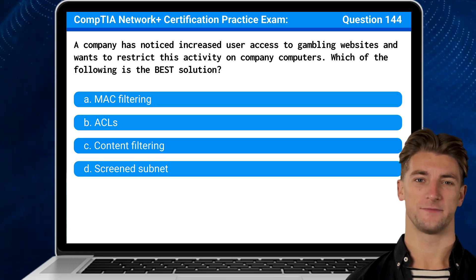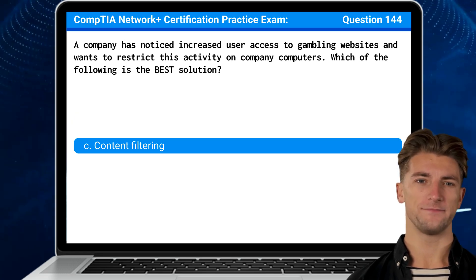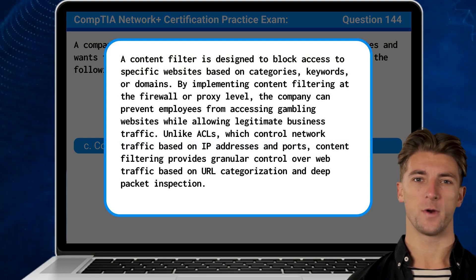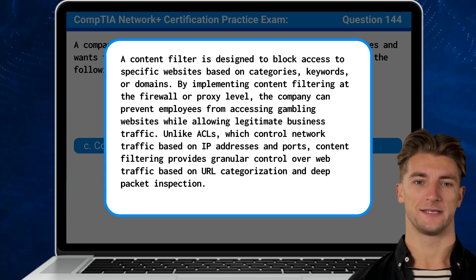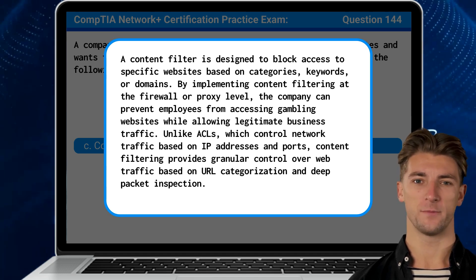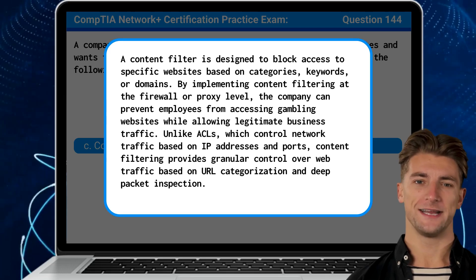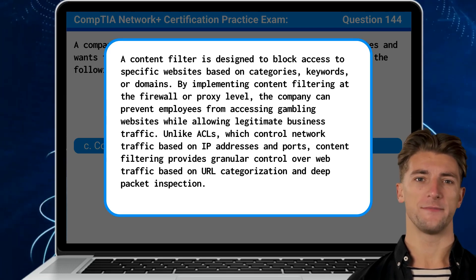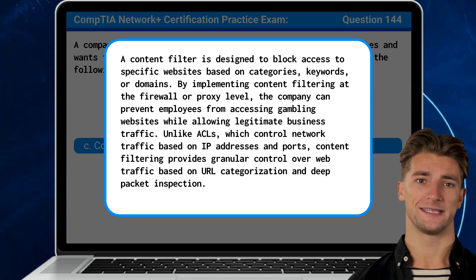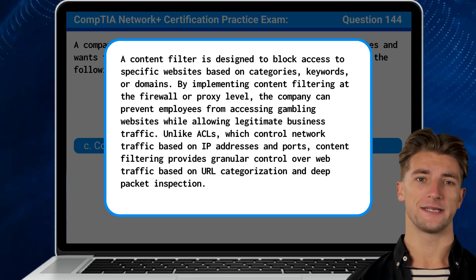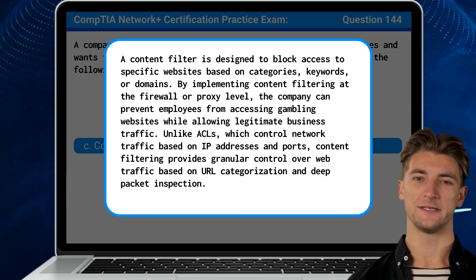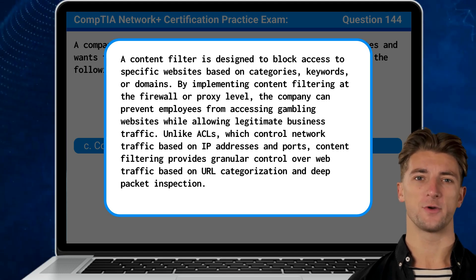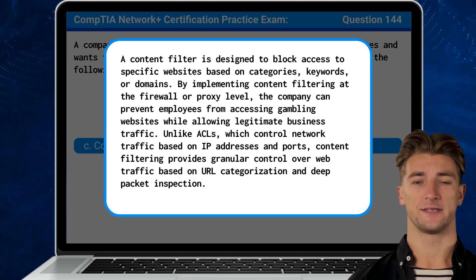The answer is C. Content filtering. A content filter is designed to block access to specific websites based on categories, keywords, or domains. By implementing content filtering at the firewall or proxy level, the company can prevent employees from accessing gambling websites while allowing legitimate business traffic. Unlike ACLs which control network traffic based on IP addresses and ports, content filtering provides granular control over web traffic based on URL categorization and deep packet inspection.